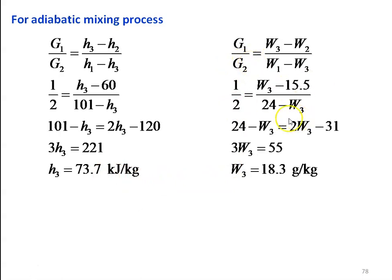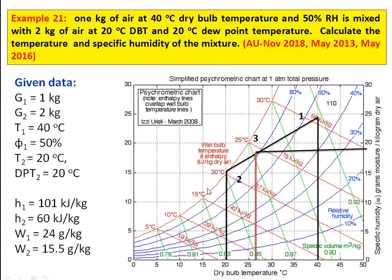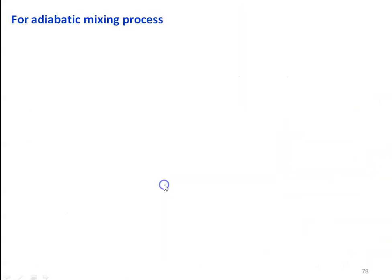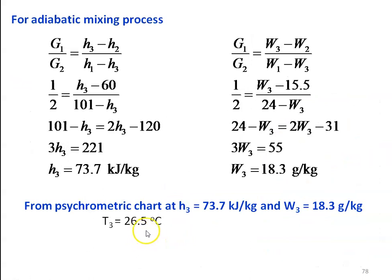Similarly, for specific humidity: G1/G2 = (W3 − W2) / (W1 − W3). Substituting G1 = 1, G2 = 2, W3 is the unknown: 1/2 = (W3 − 15.5) / (24 − W3). Cross-multiplying and solving, W3 = 18.3 g/kg. For W3 = 18.3 g/kg, you draw a horizontal line on the chart and read the temperature, which is 26.5°C. The final temperature is 26.5°C for enthalpy 73.7 kJ/kg and W3 = 18.3 g/kg.